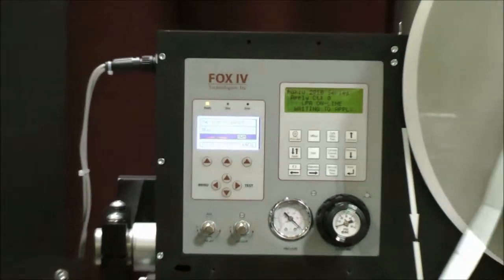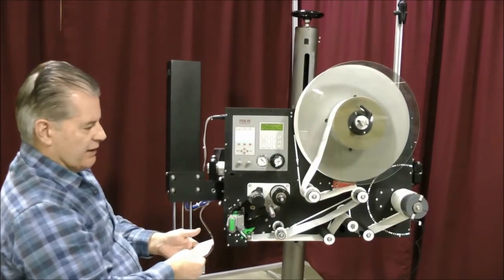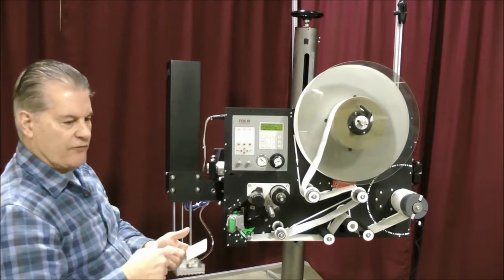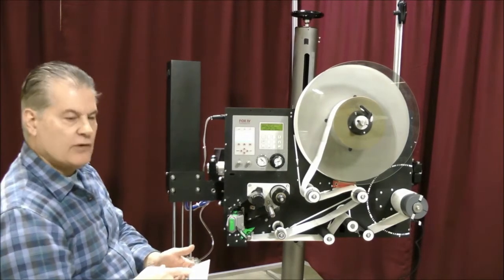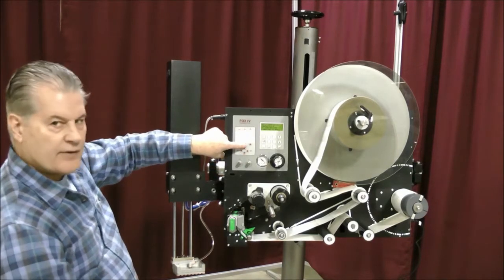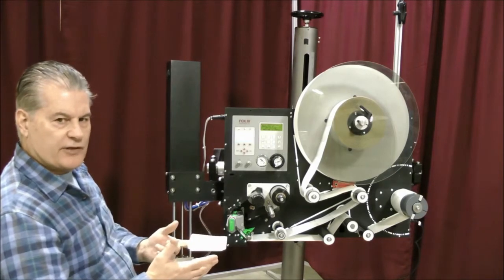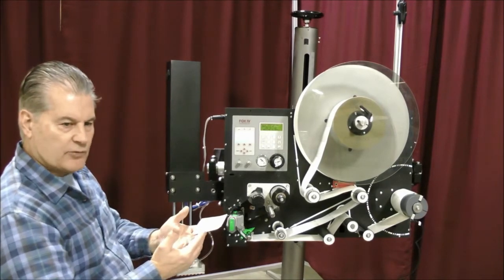What that does, it calibrates the length of the label. The length of the label is in the feed direction. In other words, if you were to go from, say, a two-inch label to a four-inch label, you would need to do the feed calibrating or top of form calibrating. That's the very first and easiest calibration when you're having label feed problems.